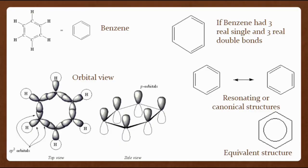Benzene is sometimes represented as a hexagon with a circle inside it to emphasize this equivalence. Since all of the atoms in the ring are sp² hybridized, they are trigonal planar with bond angles of 120 degrees, and the benzene ring is a flat molecule shaped like a hexagon. Aromatic hydrocarbons are non-polar and are insoluble in water. However, when other atoms are substituted in the benzene ring, they may be very water-soluble. For instance, phenol, which has an OH group attached to the benzene ring, is very water-soluble.